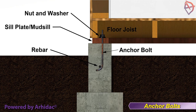A common method of fastening sill plates to a foundation is using anchor bolts, which are also known as J-bolts because of their shape. Anchor bolts should have a minimum diameter of half an inch or about 13 millimeters. A J-bolt bent end must be embedded 7 inches or about 18 centimeters in reinforced concrete, and 15 inches or about 38 centimeters in unreinforced concrete.